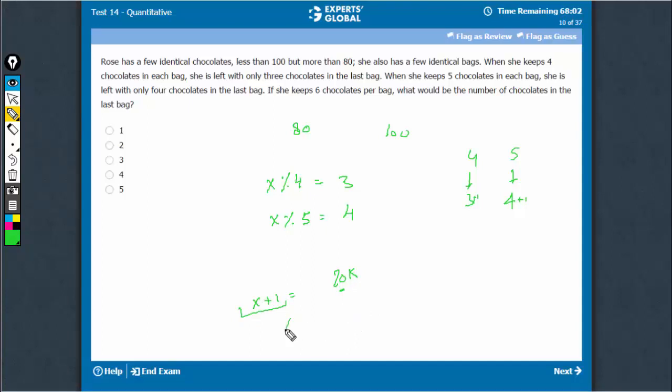So the number of chocolates with her is something like 20k-1. This is the number of chocolates. The only number of 20k-1 formed that lies between 80 and 100 is 99, when k is equal to 5.